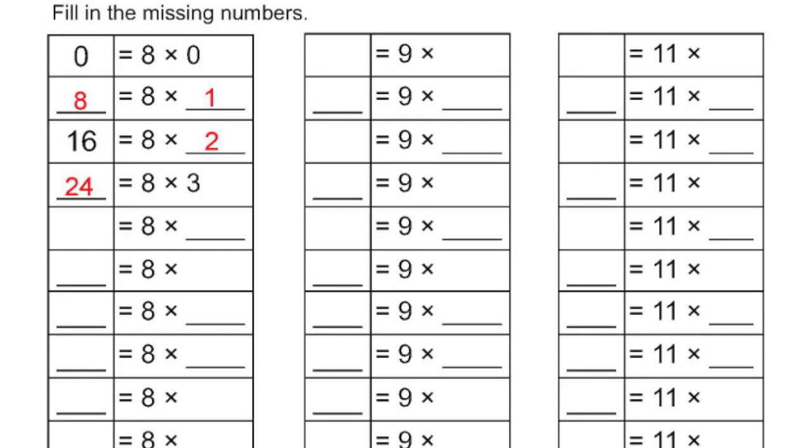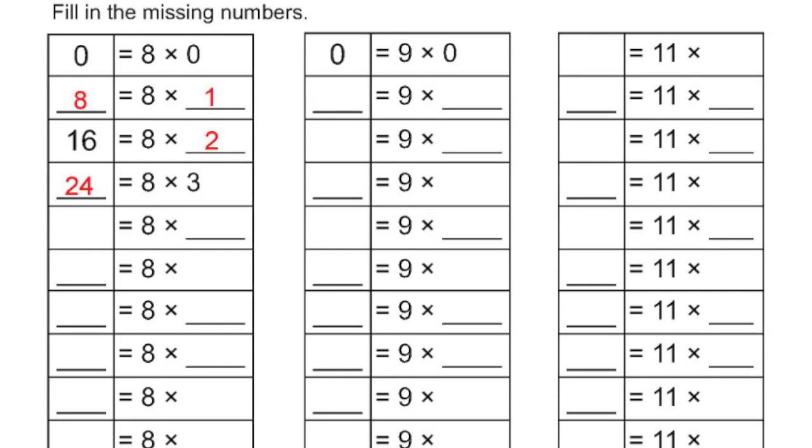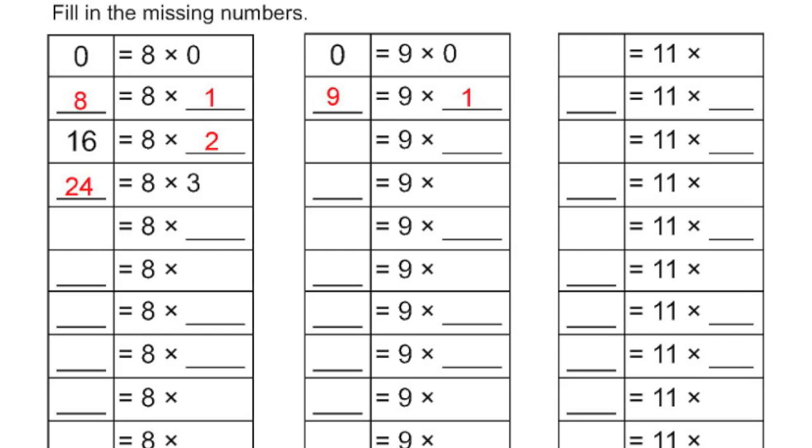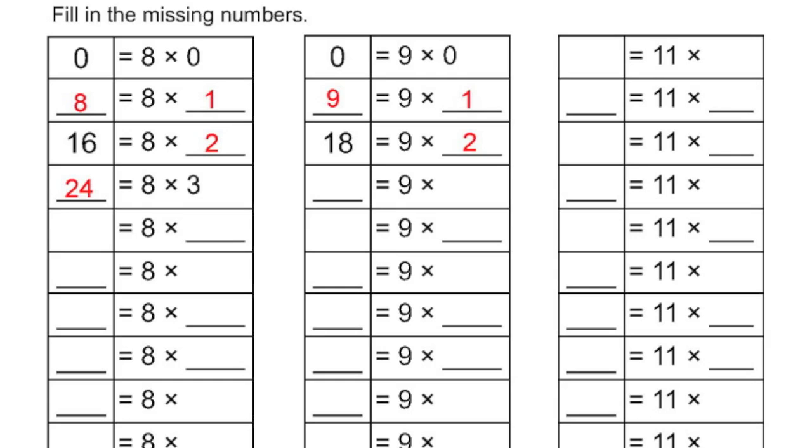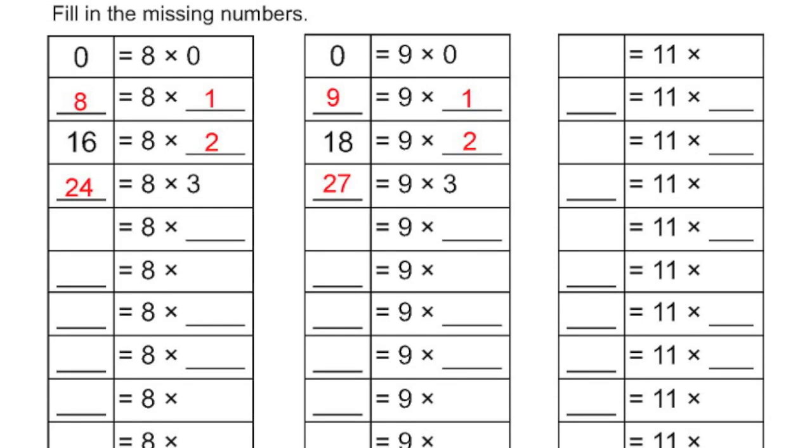Let's move over to the 9s column. 9 times 0 equals 0. 9 times 1 equals 9. 18 equals 9 multiplied by 2. 9 times 3 equals 27. We've done this. It's a very similar pattern as you saw with the 8s.